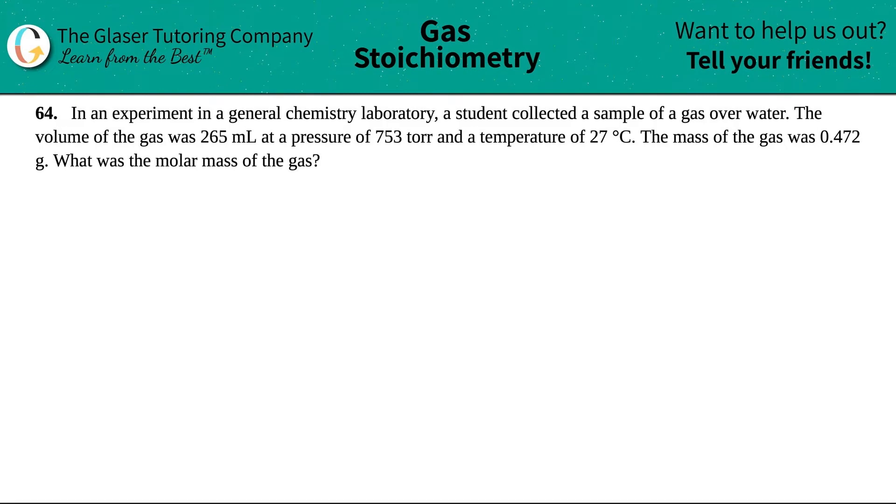Number 64: In an experiment in a general chemistry laboratory, a student collected a sample of a gas over water. The volume of the gas was 265 milliliters at a pressure of 753 torr and a temperature of 27 degrees Celsius. The mass of the gas was 0.472 grams, and now they're asking what is the molar mass of the gas.